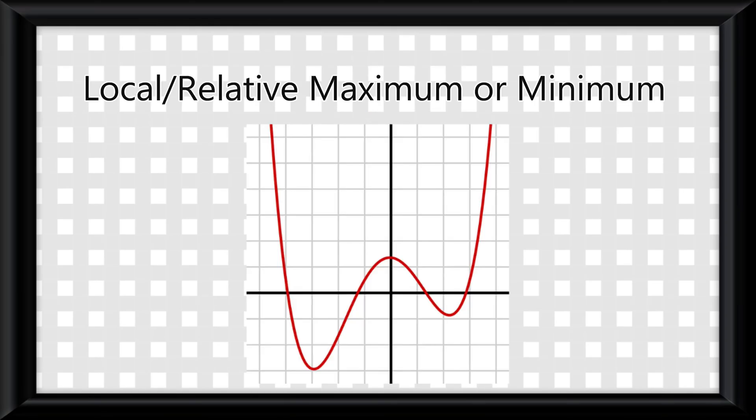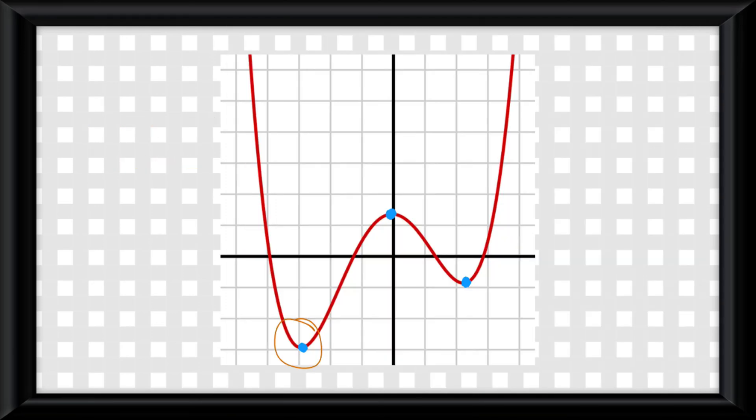Now let's get into some terminology. A local or relative maximum or minimum is a maximum or minimum of the function. Of all local maximums, the greatest is called the global or absolute maximum. Likewise, the least of all local minimums is called the global or absolute minimum.